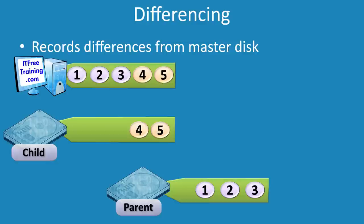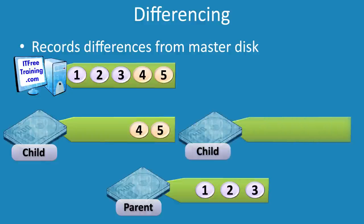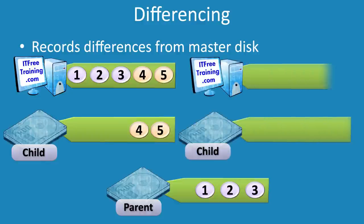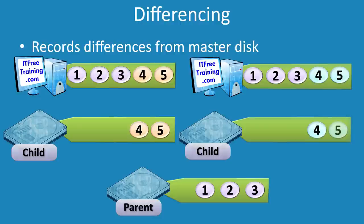The main advantage of a differencing disk is that it can save space. If a second differencing disk is added, a virtual machine using this disk will once again see the data on the parent disk. If the virtual machine makes changes to the virtual disk, these changes would be recorded in the differencing disk.